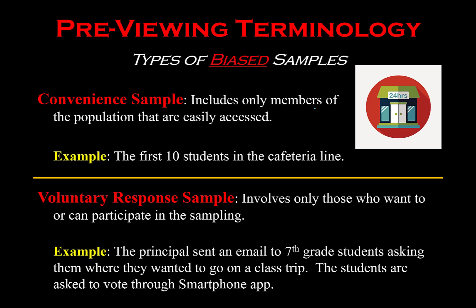Here are some ways that biased sampling can occur. A convenient sample is when you select a sample because it was easy to get a hold of those people or objects. For example, as your teacher, if I selected my students as a sample to represent the rest of the school — you are easy to get access to because I see you every day in class. However, you might not represent the entire population. You, as an algebra student in 7th grade, don't necessarily have the same opinions as a 6th grader or an 8th grader in Math 8 or Algebra 2.